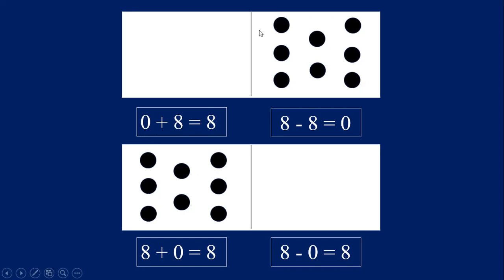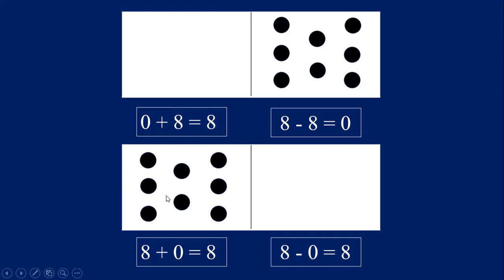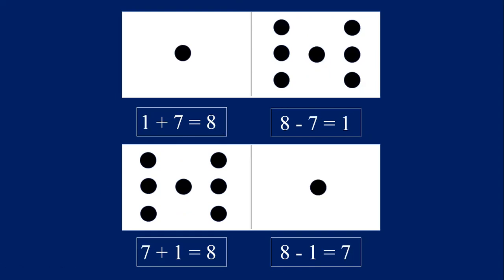We can use these dot cards to make equations. The first one would be zero plus eight equals eight. Now let's go the other direction: eight minus eight equals zero. We can switch the order and put the eight first — eight plus zero equals eight — and go the opposite direction: eight minus zero equals eight. You can see how these dot cards show us our fact family of zero, eight, and eight.